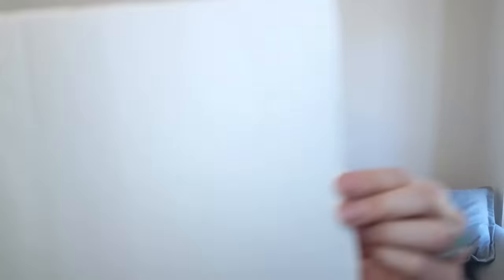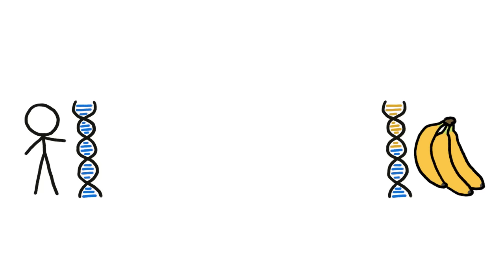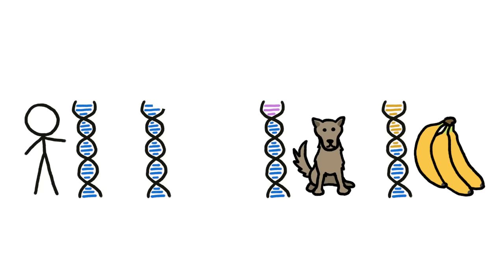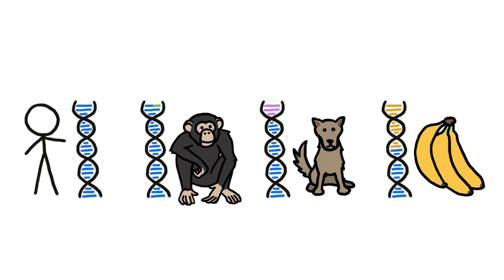One of those four-limbed vertebrates is, of course, the chimpanzee, one of our closest living relatives. It's often said that we humans share 50% of our DNA with bananas, 80% with dogs, and 99% with chimpanzees.